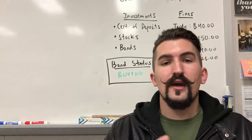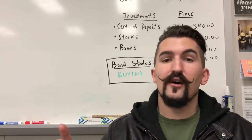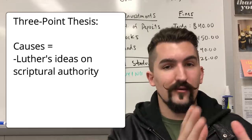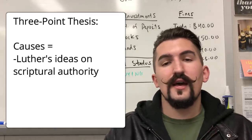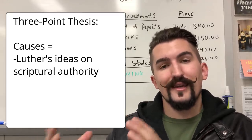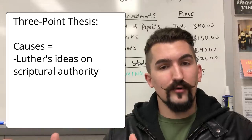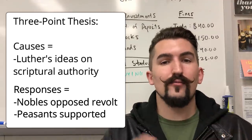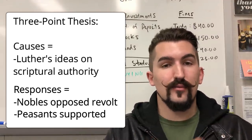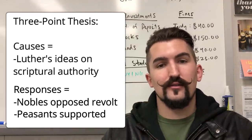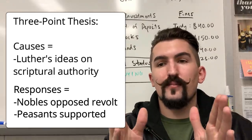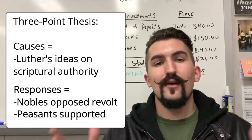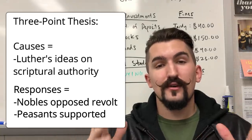So what you'll want to do is read the documents, note what they all mean roughly speaking, and use that information to construct your thesis. For the German Peasant Rebellion — and you get this all from the documents — it was caused by Luther's ideas on scriptural authority. That would be your first point, your cause. And the responses were, in general: Catholic and Protestant nobles opposed the revolt, while the German Protestant peasants supported it. And that right there is a valid thesis statement. It provided the cause — Luther's ideas on scripture — and the responses: opposition from the nobility and support by the peasantry. That was, roughly speaking, an answer to the question.